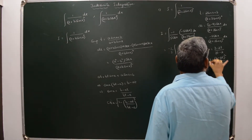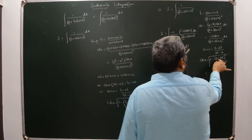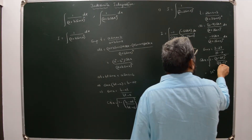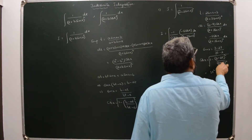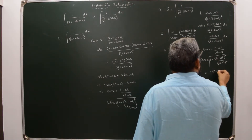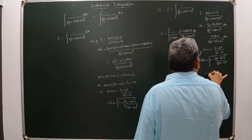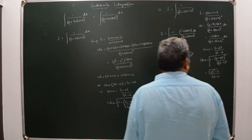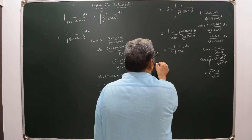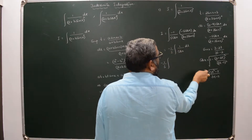Simplifying: 9t² - 4t² gives 5t², the cross terms -12t cancel, and 4 - 9 = -5, giving cos²X = (5t² - 5)/(3t - 2)² = 5(t² - 1)/(3t - 2)². Taking the square root gives cosX.